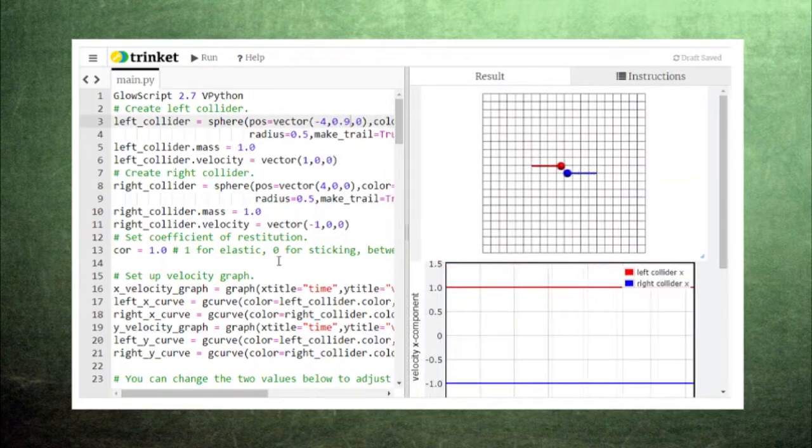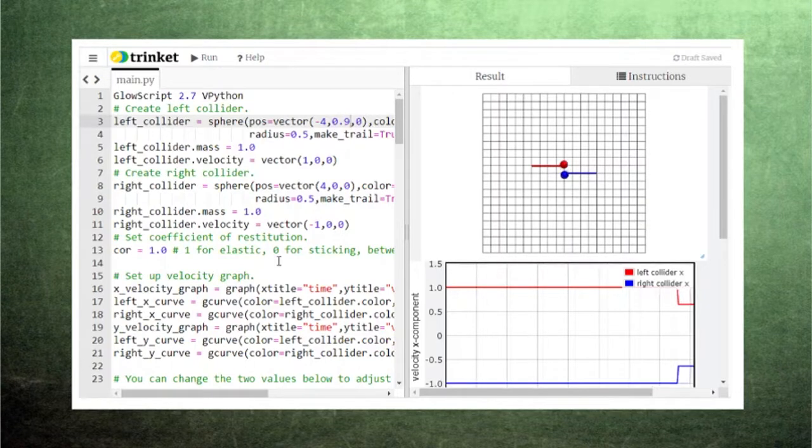These are important factors to consider when working with billiard balls or car accidents. We also need to study collisions that take place along both the x and y axes. We call these cases glancing collisions.